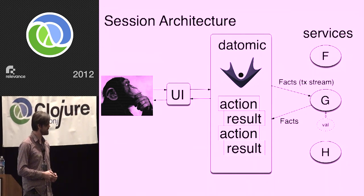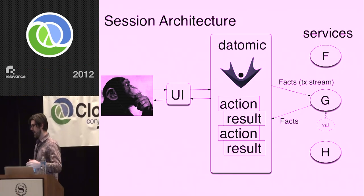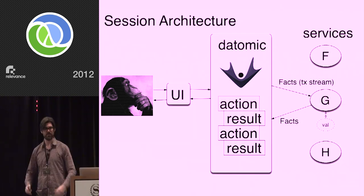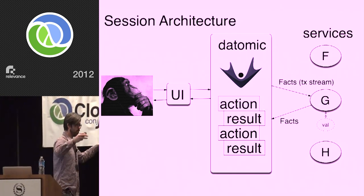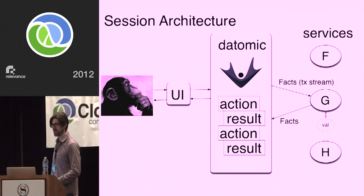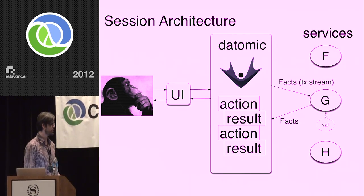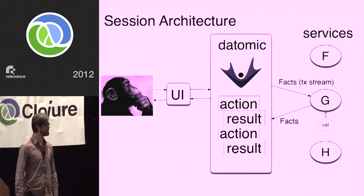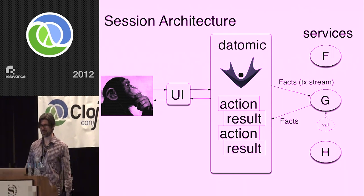Inside Datomic we have these sequences of actions and results. The human submitted this action, and the system produced this result — those things are stored in pairs in Datomic. The purpose of all the other machinery is to aggregate more of those things in the Datomic database. We have the UI that talks to the sentient being performing the computations.